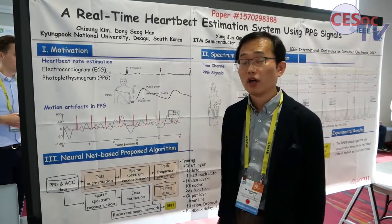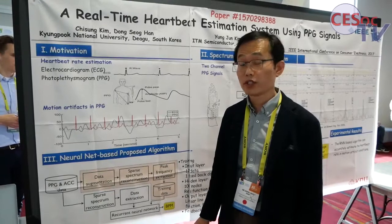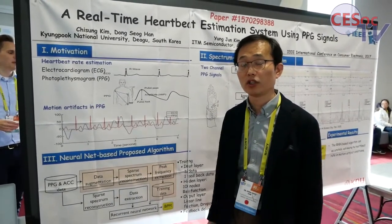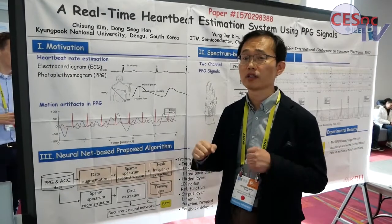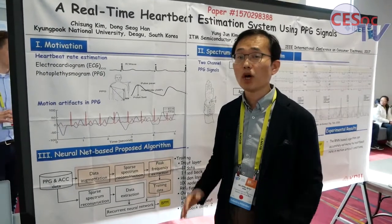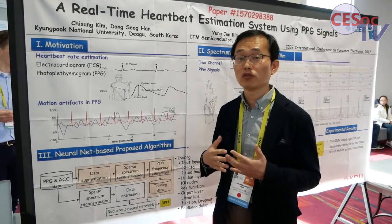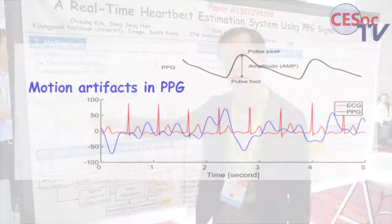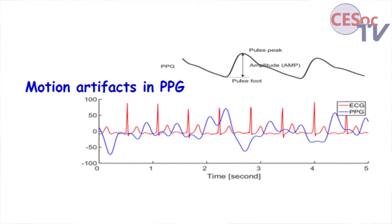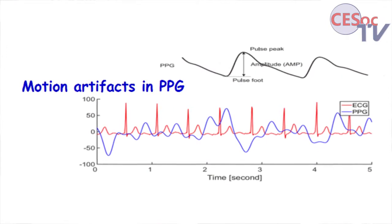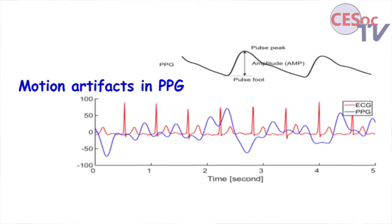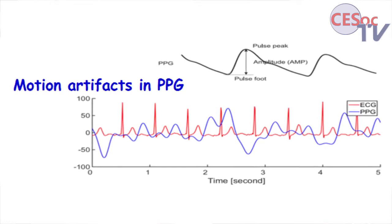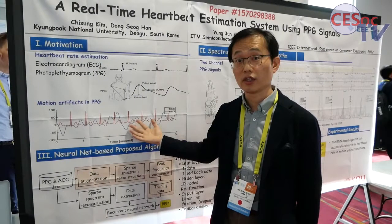Currently, most wearable systems detect the heartbeat rate. However, when we detect heartbeat rate, we have standards to confirm. While we are moving or working, we want to detect the heartbeat rate exactly. This is the exact heartbeat rate pulses, but from the PPG signals from the watches, the signal is varying like this. We cannot get the regular pulse like this way.